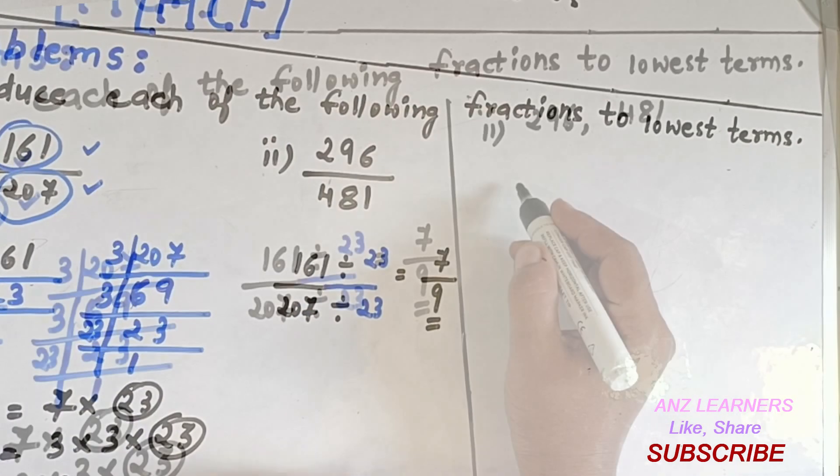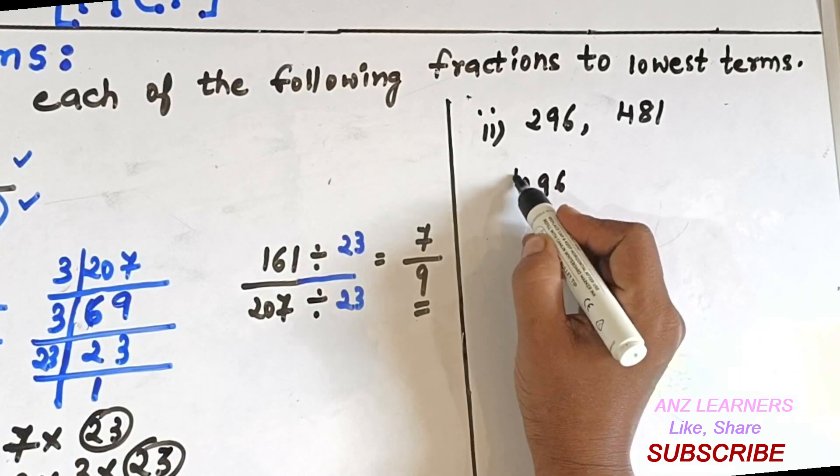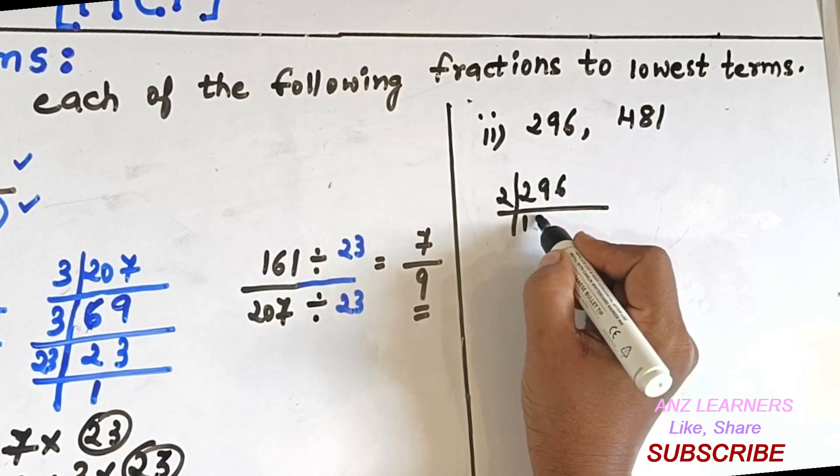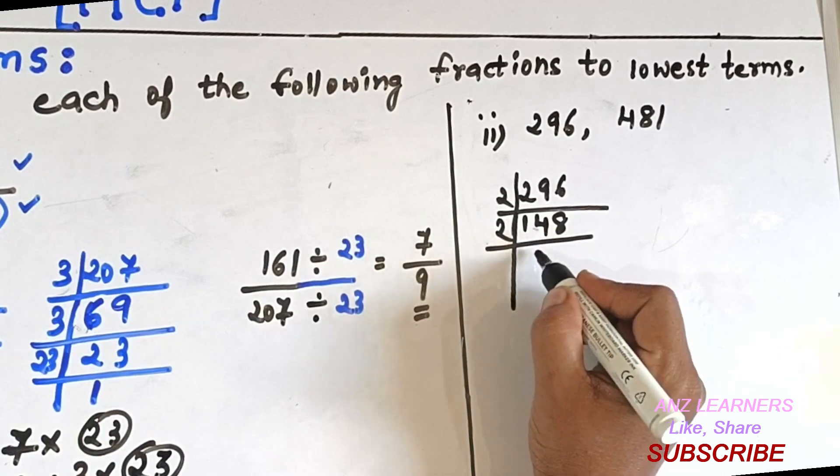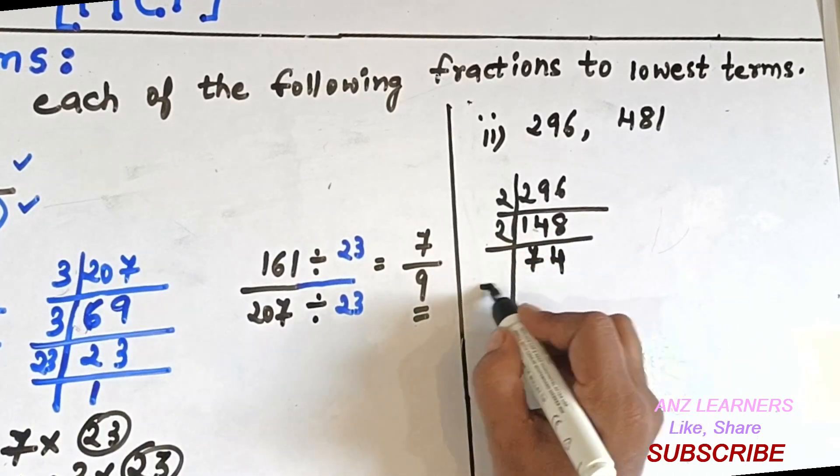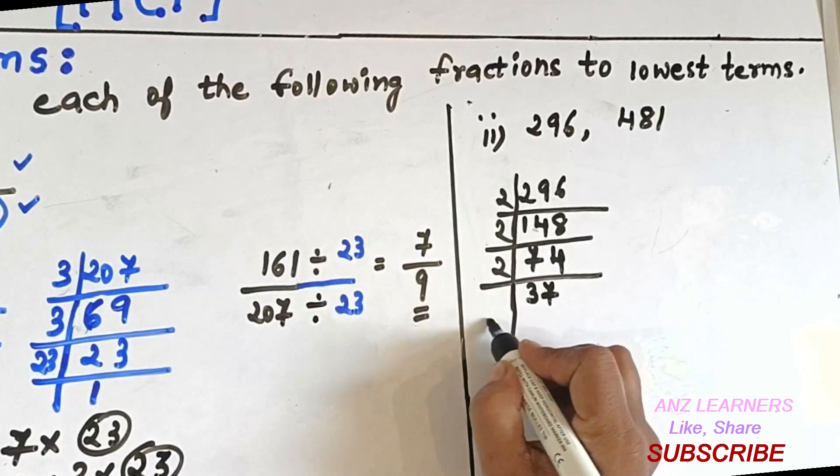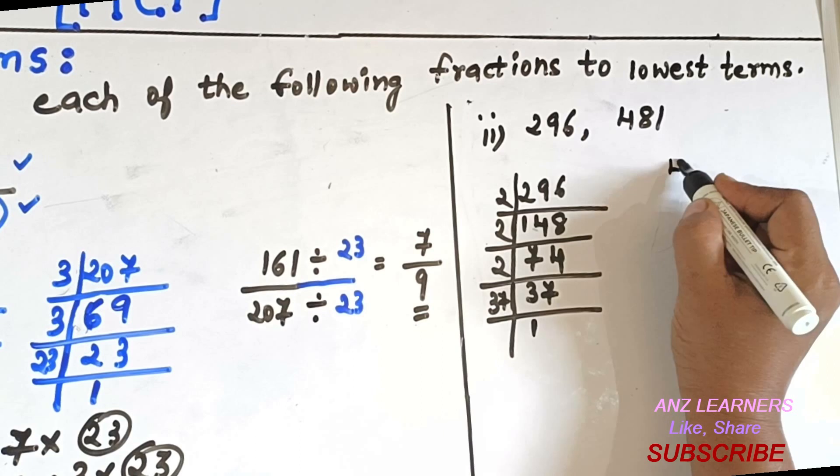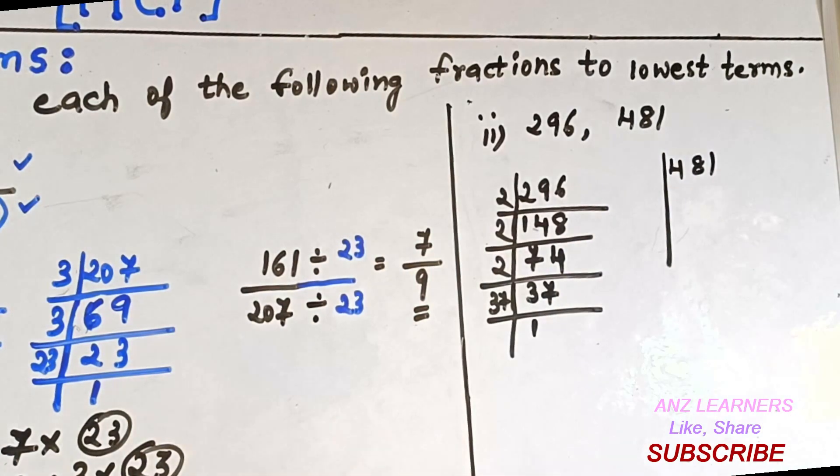The same way, we will find the factors for 296 and 481. Breaking down 296 by dividing by 2 repeatedly - 296, 148, 74, 37. Since 37 is a prime number, we will stop here.